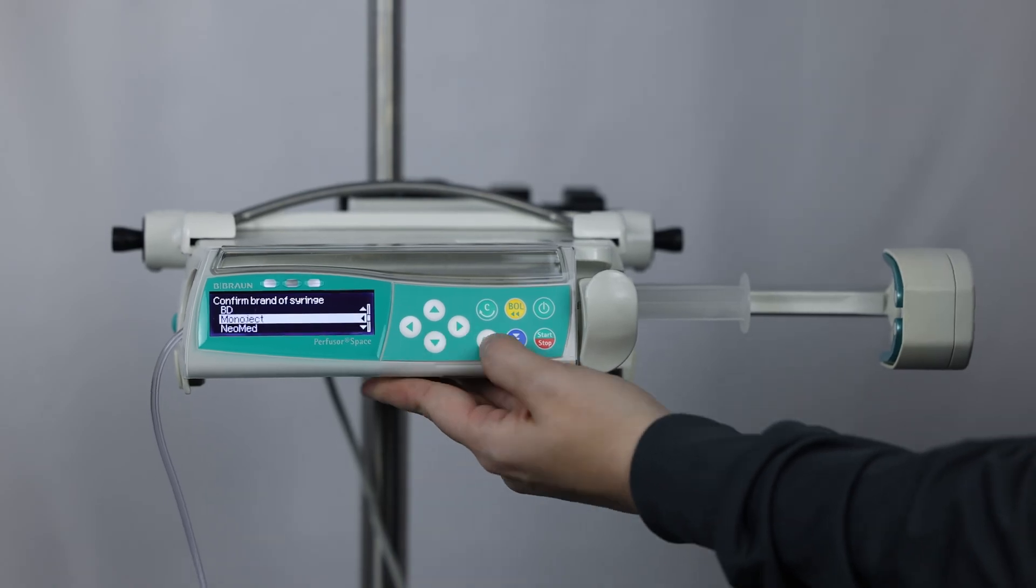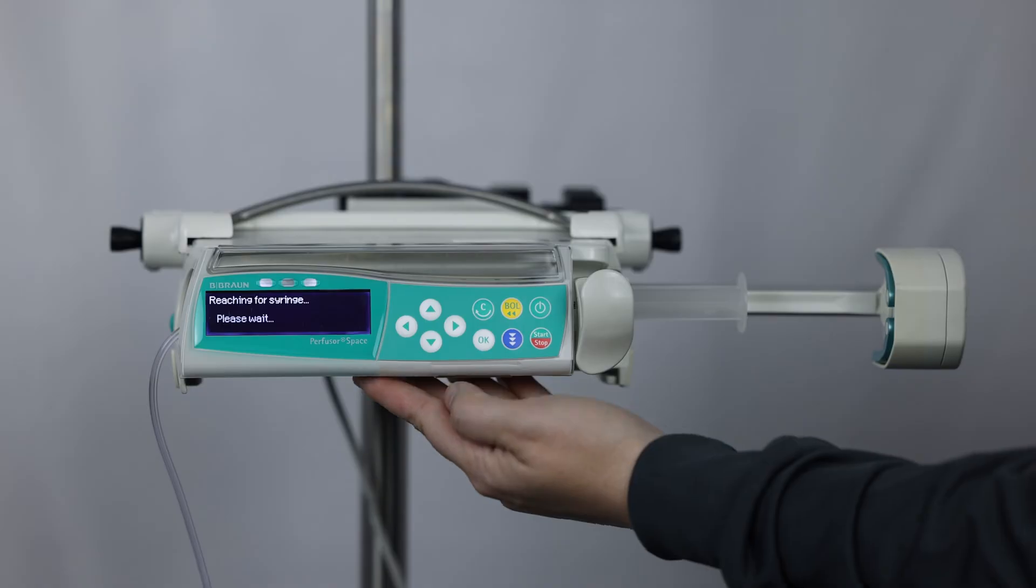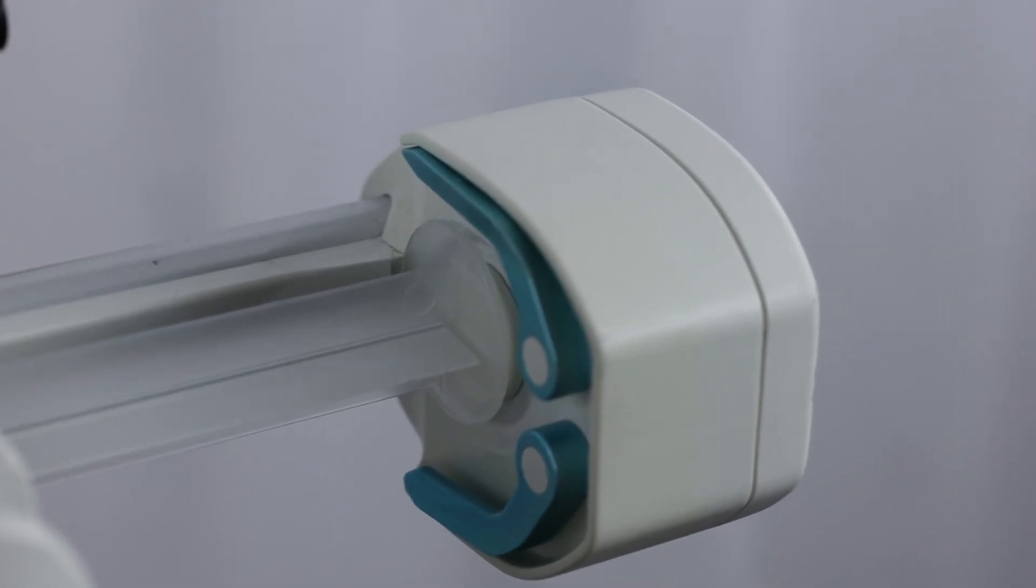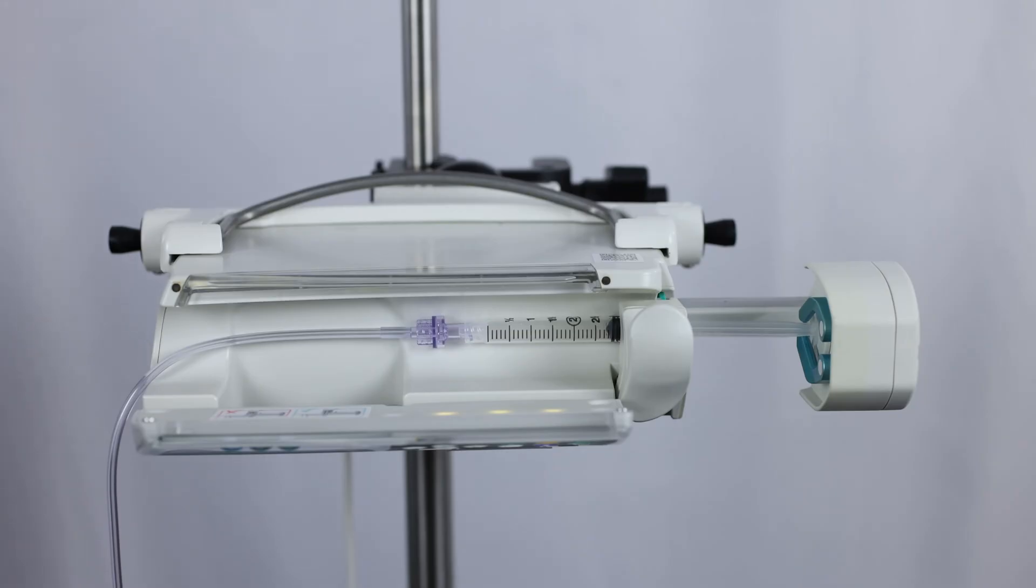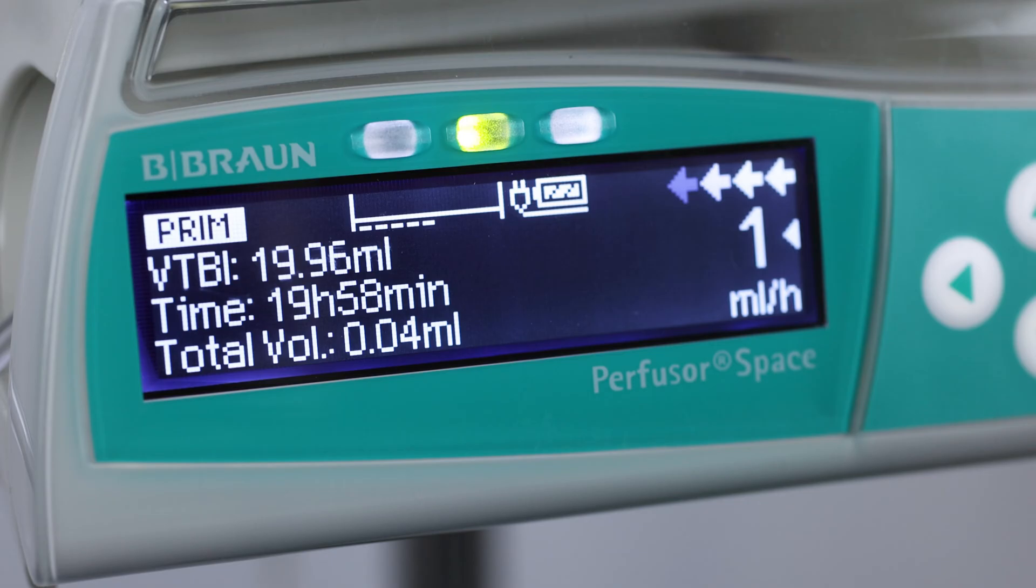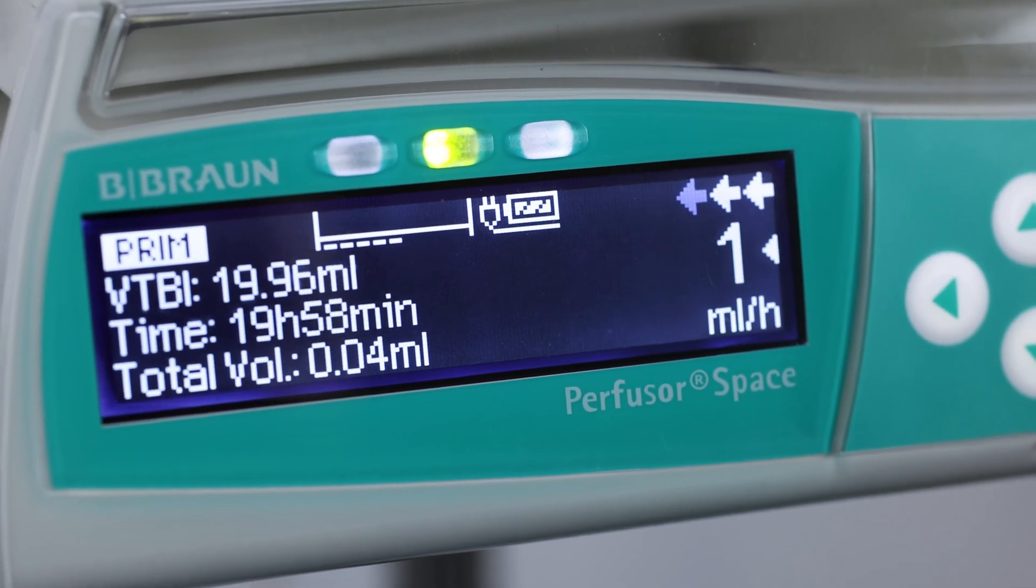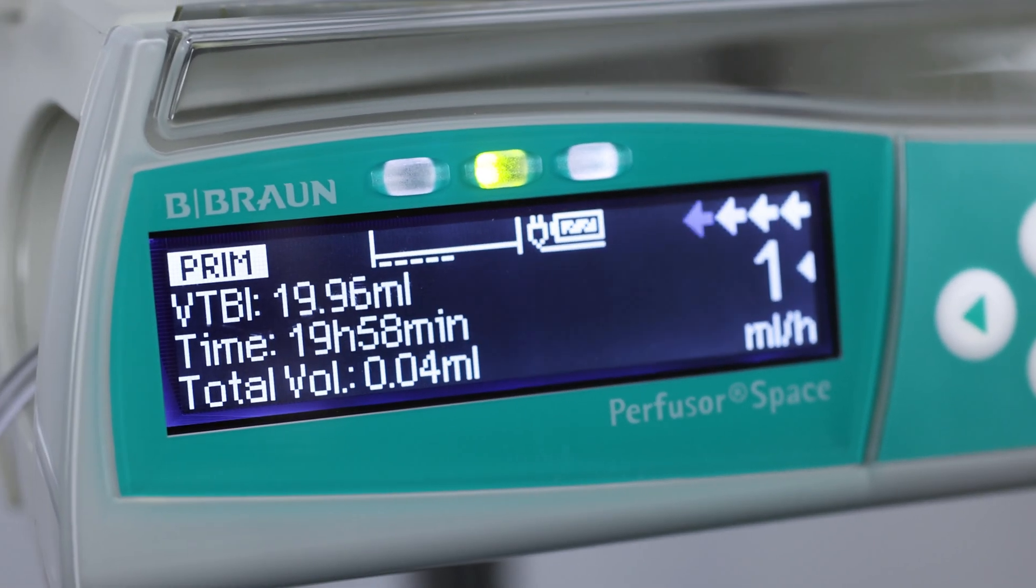Syringes manufactured by BD, Terumo, Monoject, and B. Braun are all compatible with this syringe pump. Luer lock connector syringes, varying from 1 milliliter to 60 milliliters, can all be used with the B. Braun Perfuser Space. The flow rate range for the B. Braun Perfuser pump is 0.01 to 999 milliliters per hour.